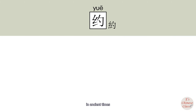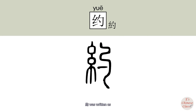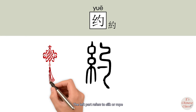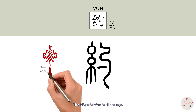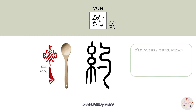In ancient times, 约 was written with the left part referring to silk or rope, and the right part referring to a person. So the origin meaning of 约 is restrict, 约束.